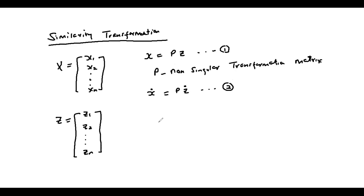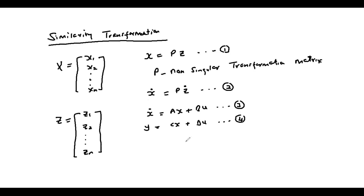If we consider the state equations of a linear time-invariant system as x-dot = Ax + Bu (equation three) and y = Cx + Du (equation four), we can rewrite equation three by replacing x-dot with P z-dot, giving P z-dot = APz + Bu, and call this equation five.